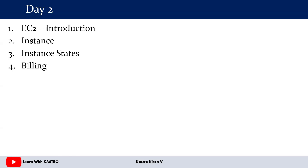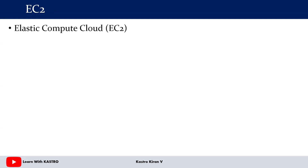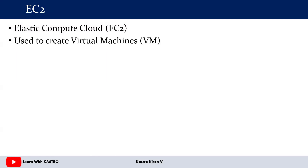Let us talk about an introduction to the EC2 service. The full form of EC2 is Elastic Compute Cloud. We use this EC2 service to create computing resources. By using the EC2 service available in AWS Cloud, we create virtual machines. Virtual machines are known as servers.